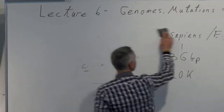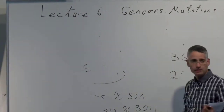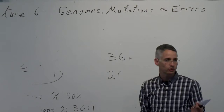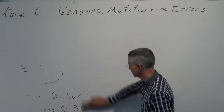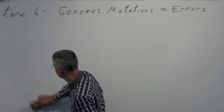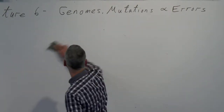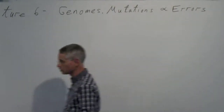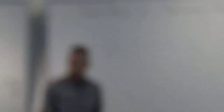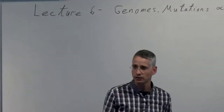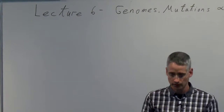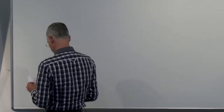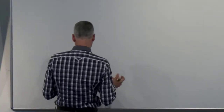Is DNA replication the only mechanism that could give errors inside the cell, or are there other places in the central dogma? What about transcription and translation? Which do you think is more prone to errors? Translation is likely more problematic — let's look at both.